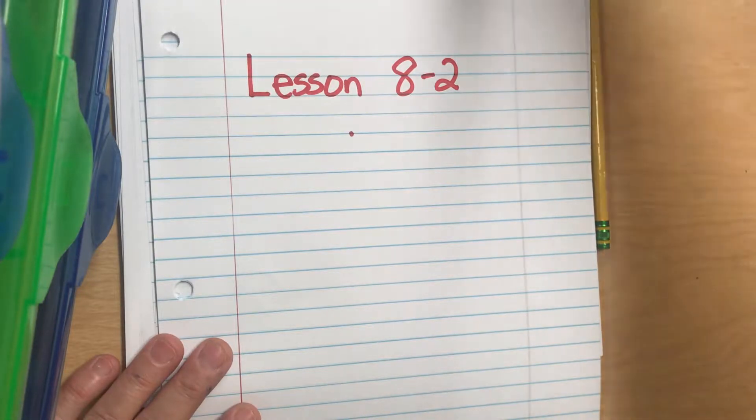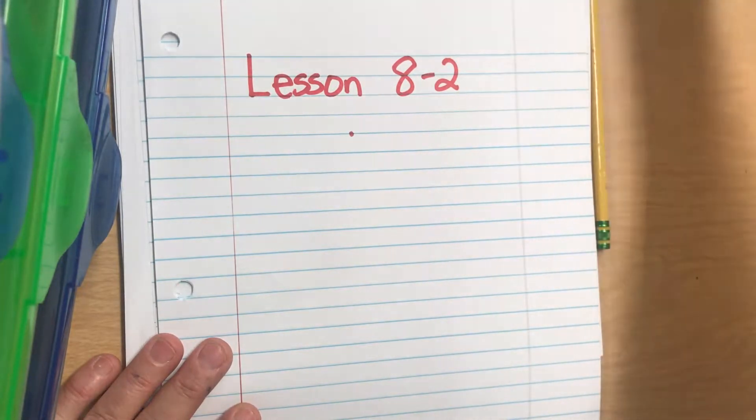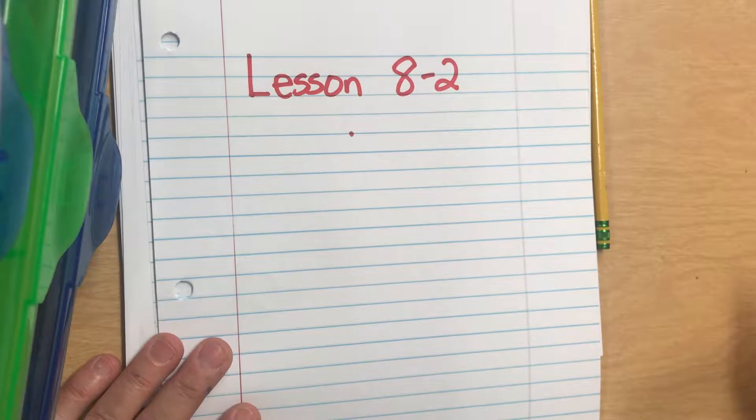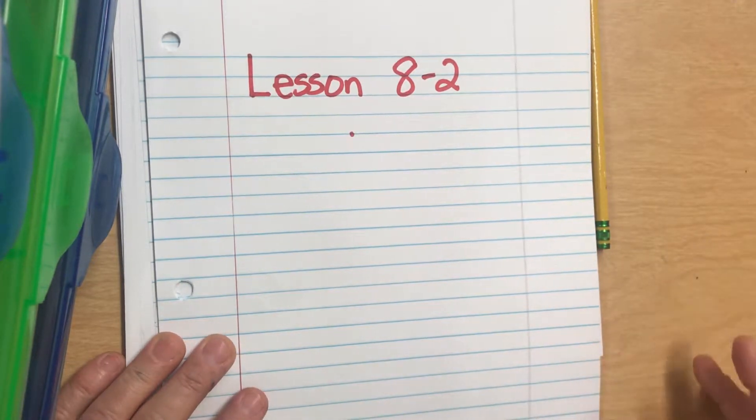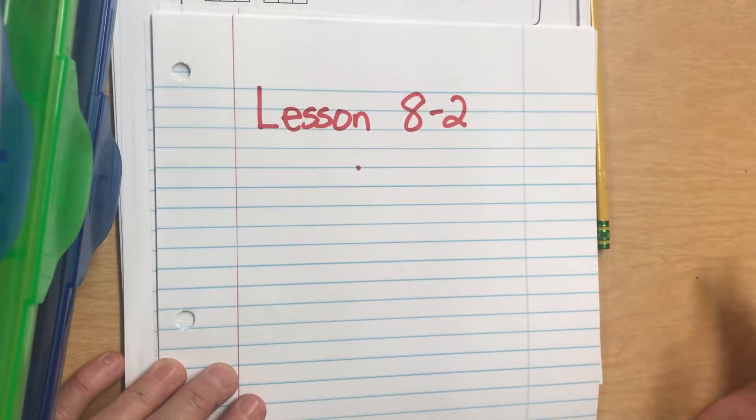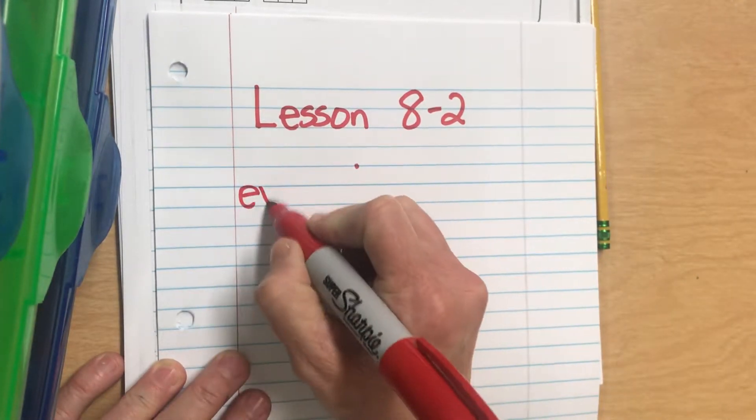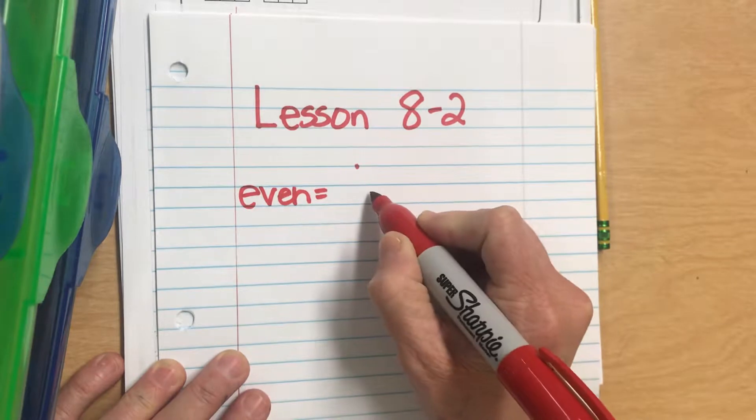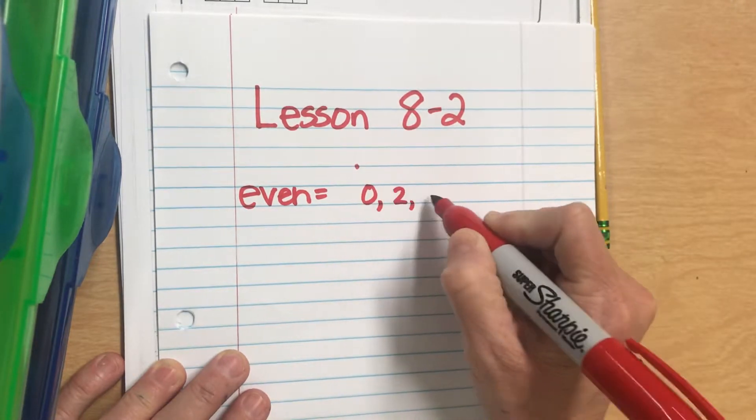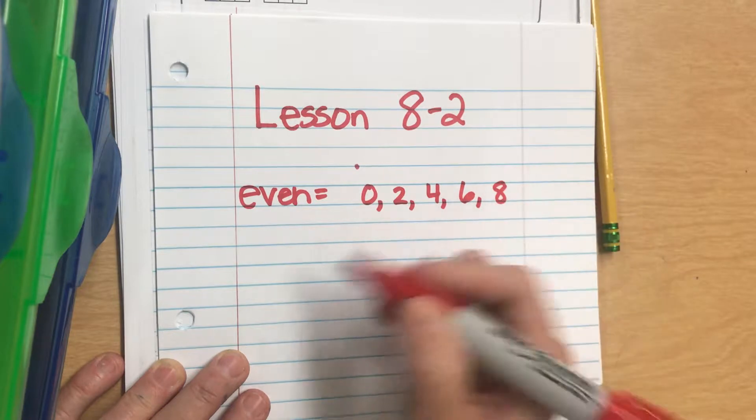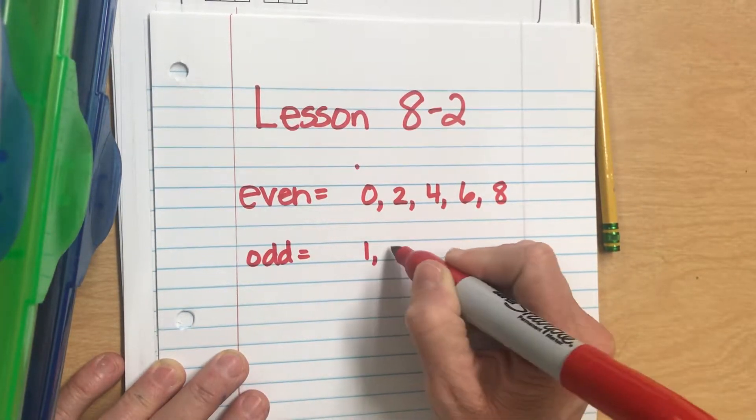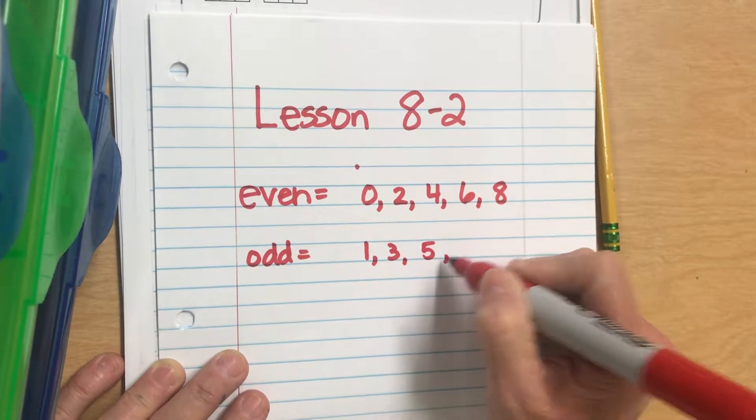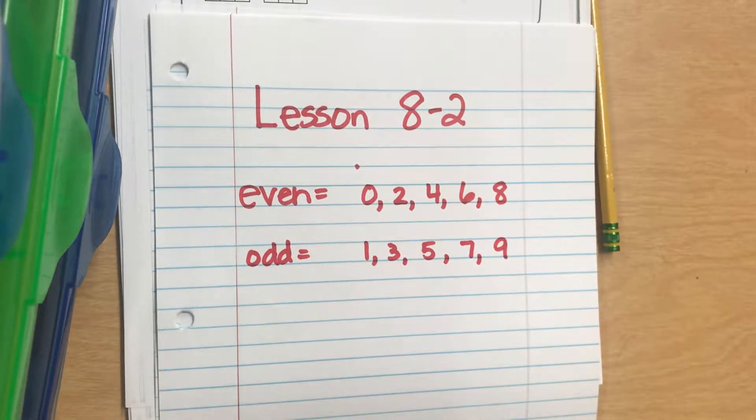Lesson 8-2. We are going to be talking about patterns that we see in addition, and it pretty much comes down to even and odd numbers. Even numbers end in zero, two, four, six, or eight. Odd numbers end in one, three, five, seven, and nine.